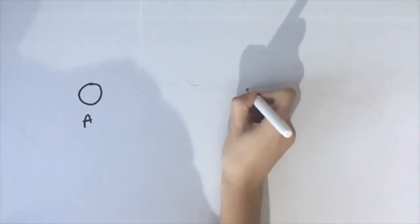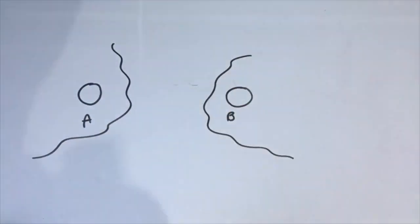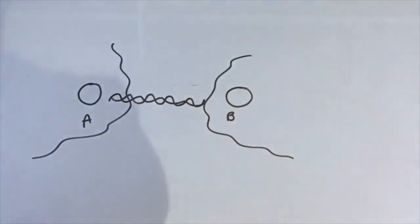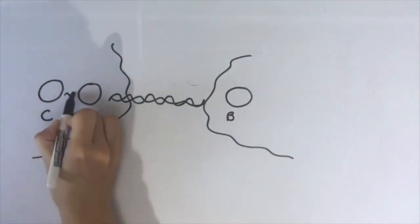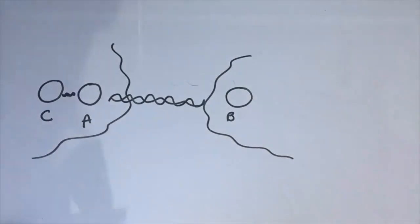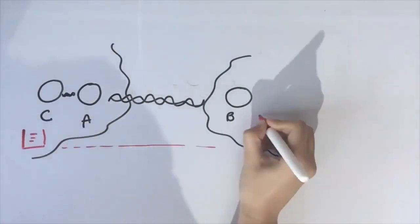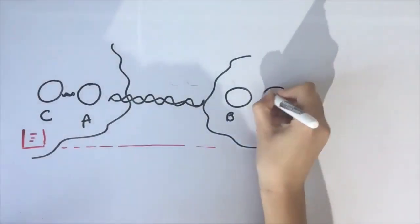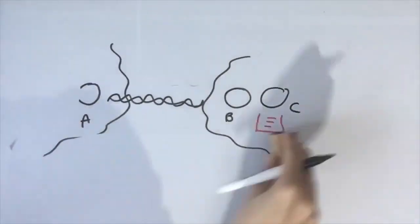Quantum teleportation involves three particles: A and B are already entangled, and C is entangled to A. Everything affecting A also affects B, so the information of C will be transferred to B and reconstructed there, and of course it will be destroyed from the other side.